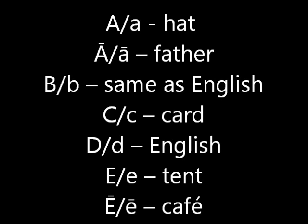You would pronounce the letter B the same as in English. You would pronounce the letter C as a hard C, like card — it's never a soft C, like cider. You would pronounce the letter D as in English. You would pronounce the letter E as E, like tent. A long E you would pronounce like A, as in cafe.